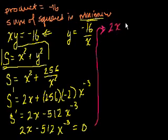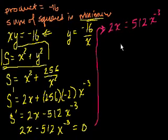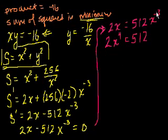Adding 512 x to the minus 3 to both sides gives 2x equals 512 x to the minus 3. Multiplying both sides by x to the third: 2x to the fourth equals 512. Dividing both sides by 2 gives x to the fourth equals 256.